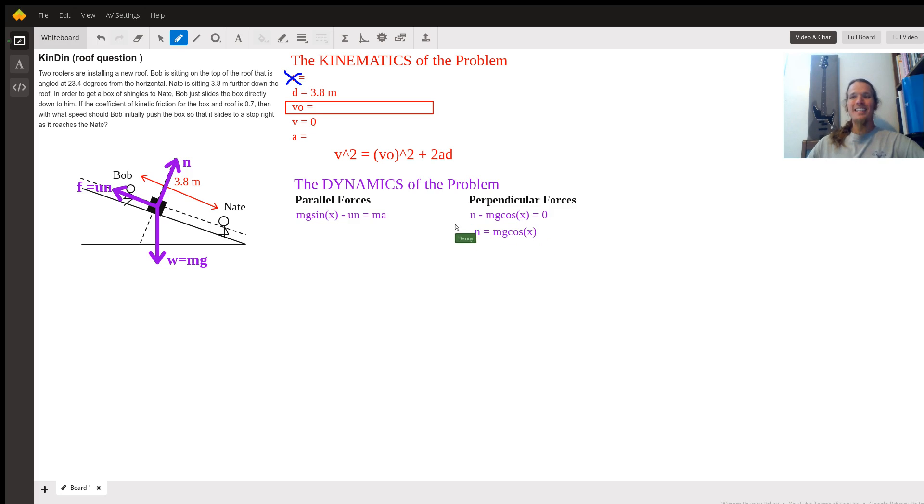Now, because I know that, I can plug the normal force, Mg cosine X, in for normal force in this parallel equation and do a little mathematical trickery here. So we have Mg sine X minus mu times Mg cosine X, and we'll set that equal to Ma.